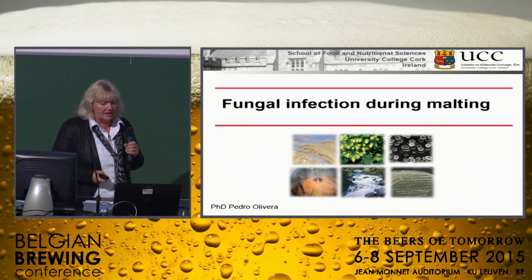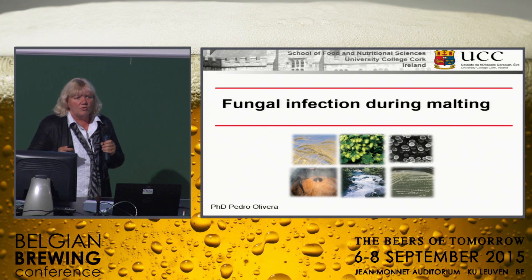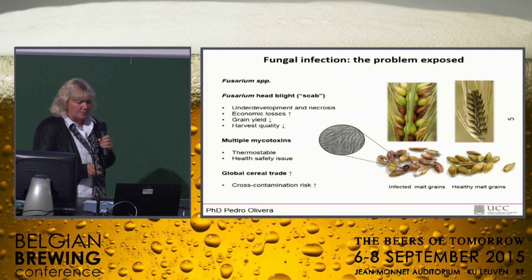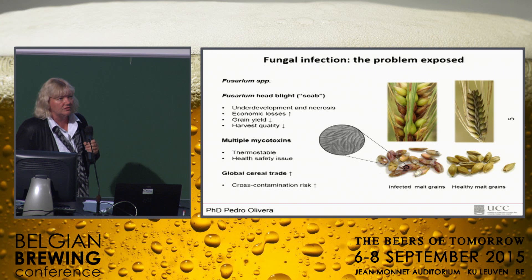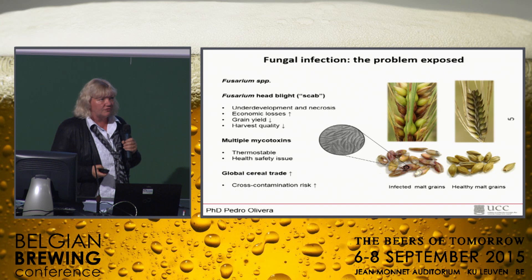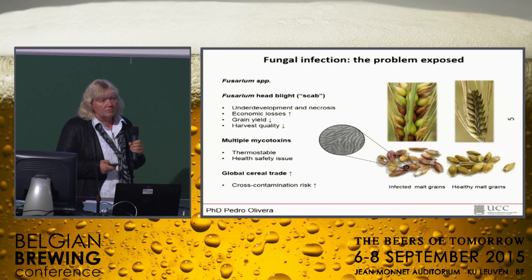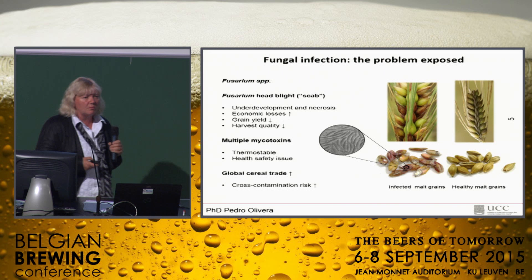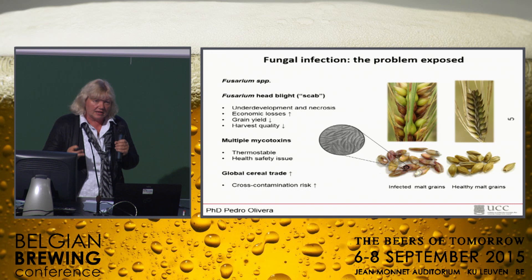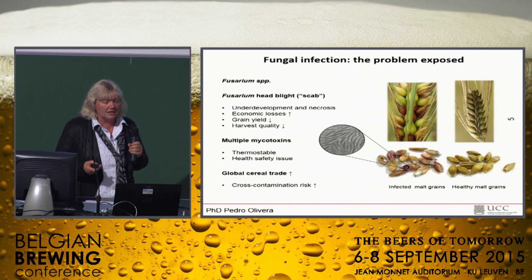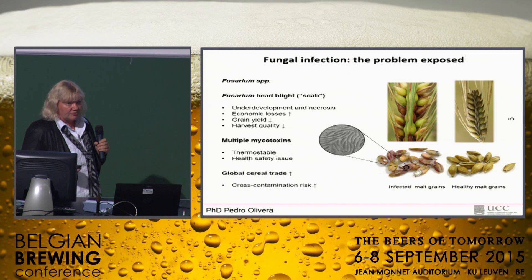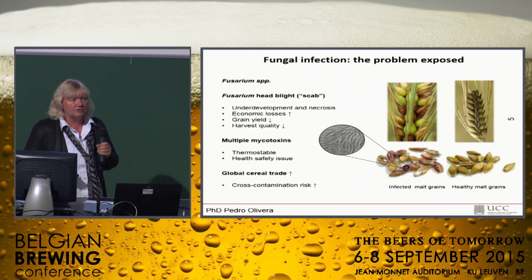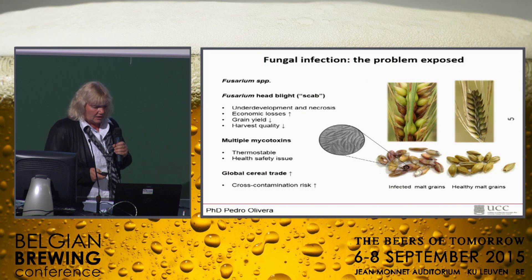First of all, I want to talk about lactic acid bacteria and their antifungal properties, and to do so I'd like to introduce fungal infection during malting. Fusarium infections are quite common, leading to diseases such as Fusarium head blight, which leads to a lot of economic losses and problems with grain yield. But most importantly, they produce mycotoxins. Mycotoxins have a multitude of health effects — they are toxic, and they can also have a negative impact on DNA replication in your body. There are restrictions on how much mycotoxin you can have in your product, which can lead to the rejection of grain at a maltster's company.